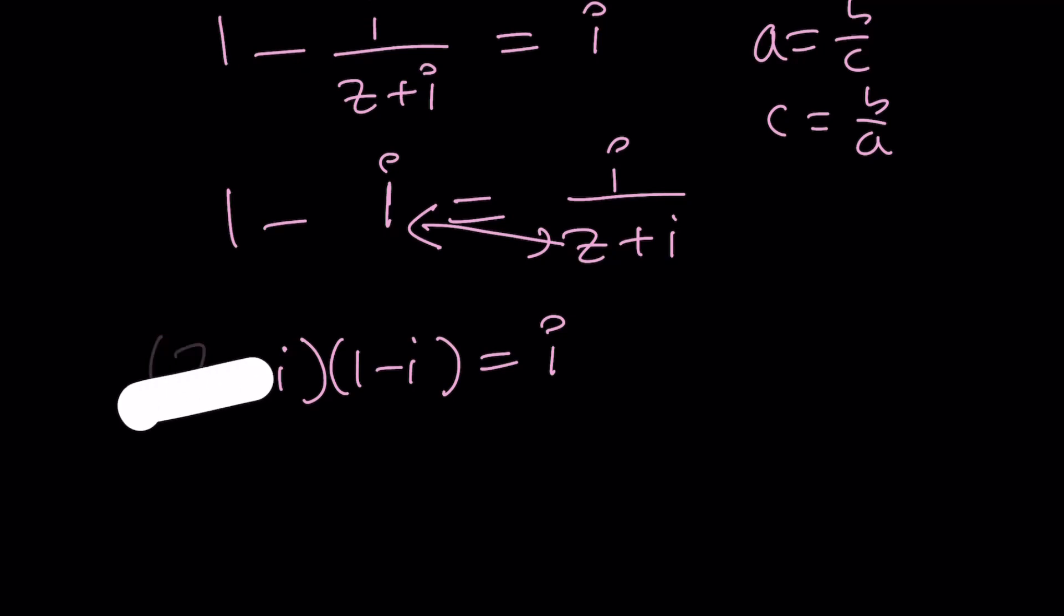And from here, using my shortcut, we can write this as Z plus I equals I over one minus I. So we're very close to the solution. I know we kind of took a meandering approach, kind of like a roundabout way to do it. But that's the purpose.